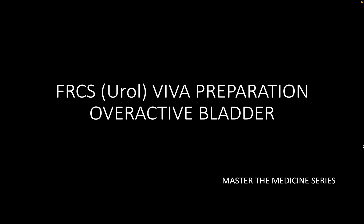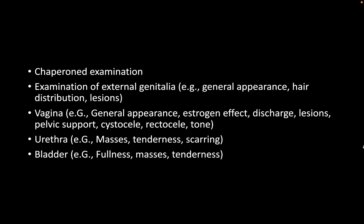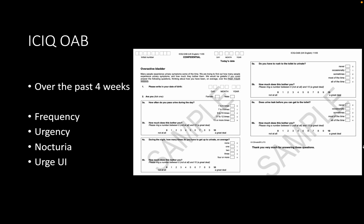Regarding the initial history and examination, the examiner notes that radiation history was the only missed element. UTI and estrogenization of the vagina (ruling out atrophic vaginitis) were mentioned. The candidate should also specifically comment on urethral appearance — any tenderness, scarring, masses, caruncle, or similar findings — as part of the examination.